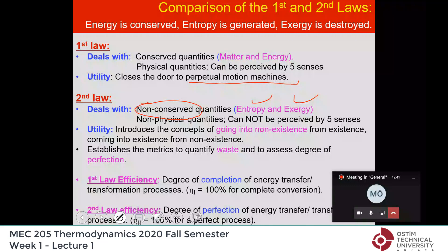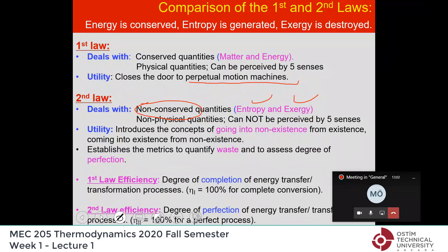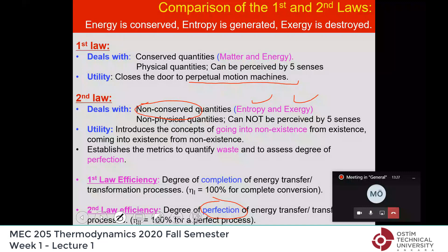We will have two kinds of efficiency. The first law efficiency — we will start doing that in Chapter 2 — is the degree of completion of energy transfer or transformation process; if there is complete conversion, the efficiency is 100%. The second law efficiency is a measure of perfection: if a process has a second law efficiency of 100%, that process is thermodynamically perfect. So we will define perfection from the second law point of view.